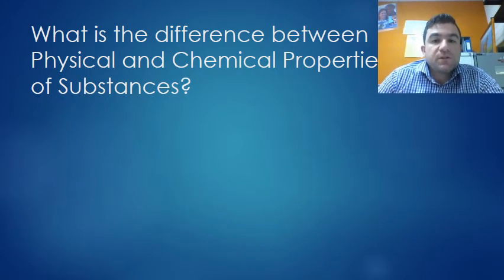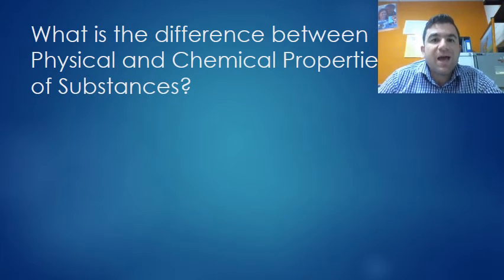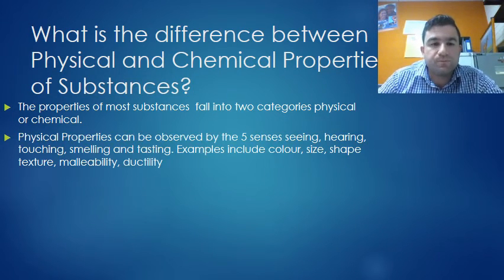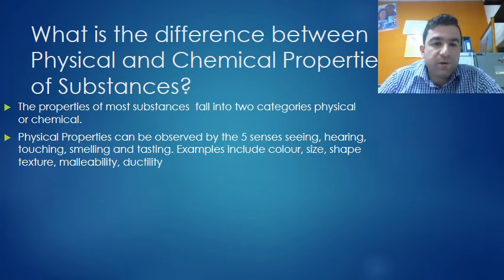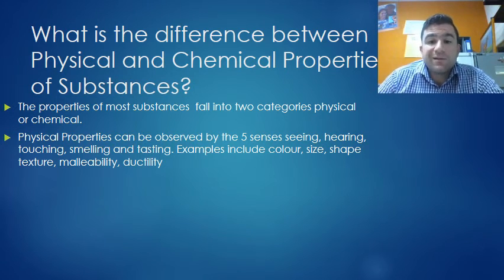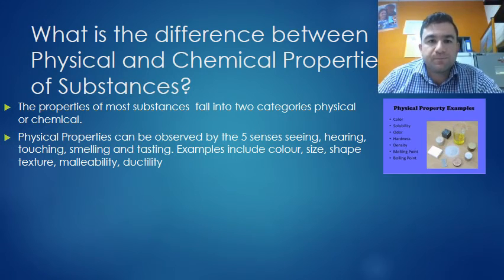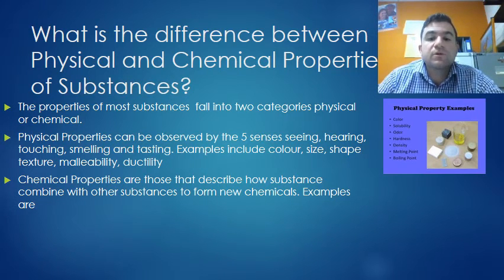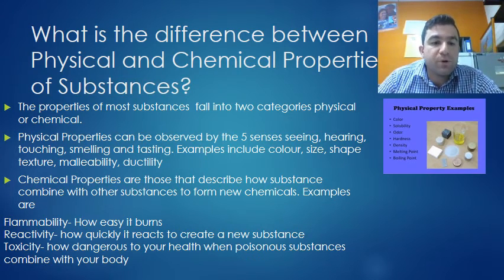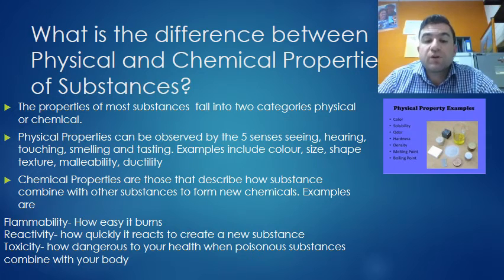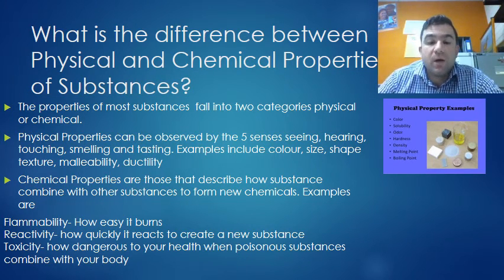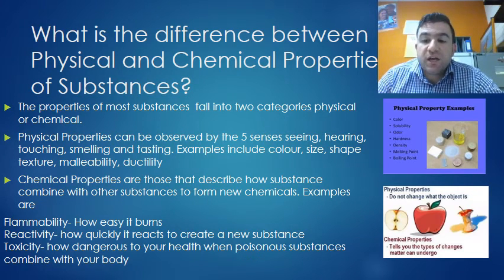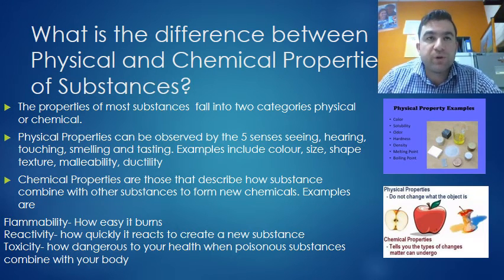What's the difference between physical and chemical properties of substances? Every substance has physical and chemical properties. The properties of most substances fall into two categories: physical and chemical. Physical properties can be observed by the five senses - hearing, touching, smelling, tasting. Examples include color, size, shape, texture, malleability, ductility. Chemical properties are those that describe how substances combine with other substances to form new chemicals. Examples are flammability, how easy it burns; reactivity, how quickly it reacts to create a new substance; toxicity, how dangerous to your health when poisonous substances combine in your body.